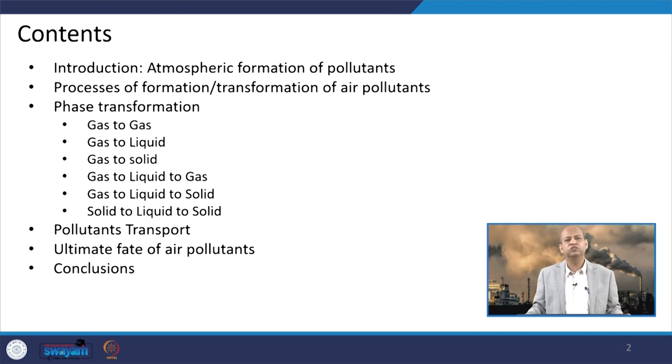For example, gaseous pollutants can get transformed into liquid form like droplets — they get into moisture and all those. They can get converted into solid particles, that is particulate matter, so phase transformation may also happen. So you can say there are atmospheric formation of new air pollutants. We will see what are the processes of those formation and transformation of air pollutants when they get into the atmosphere.